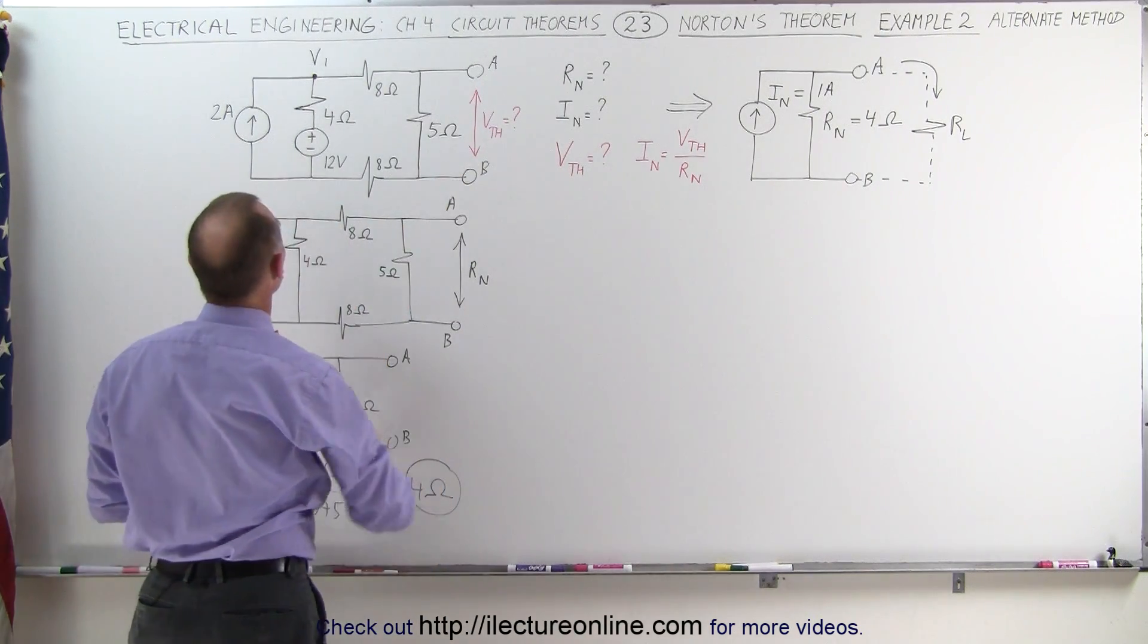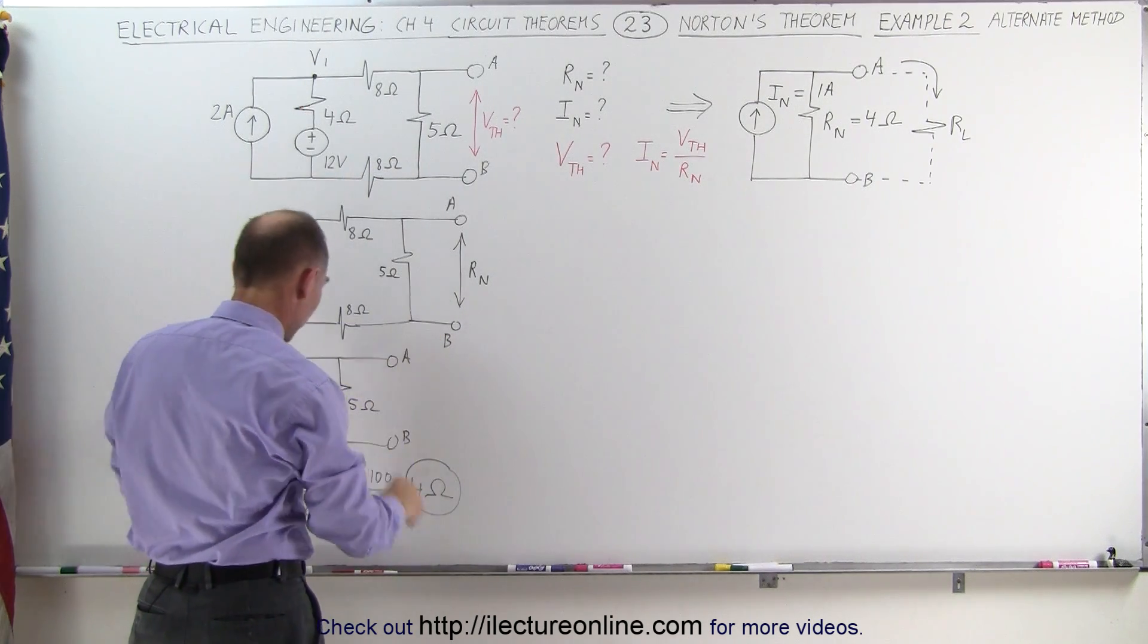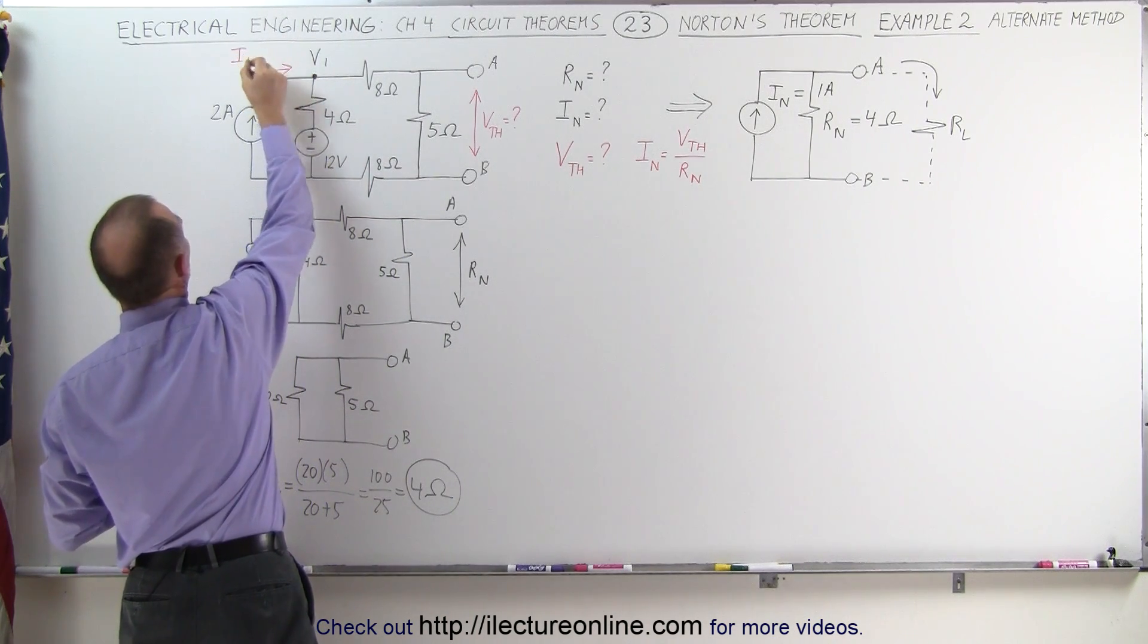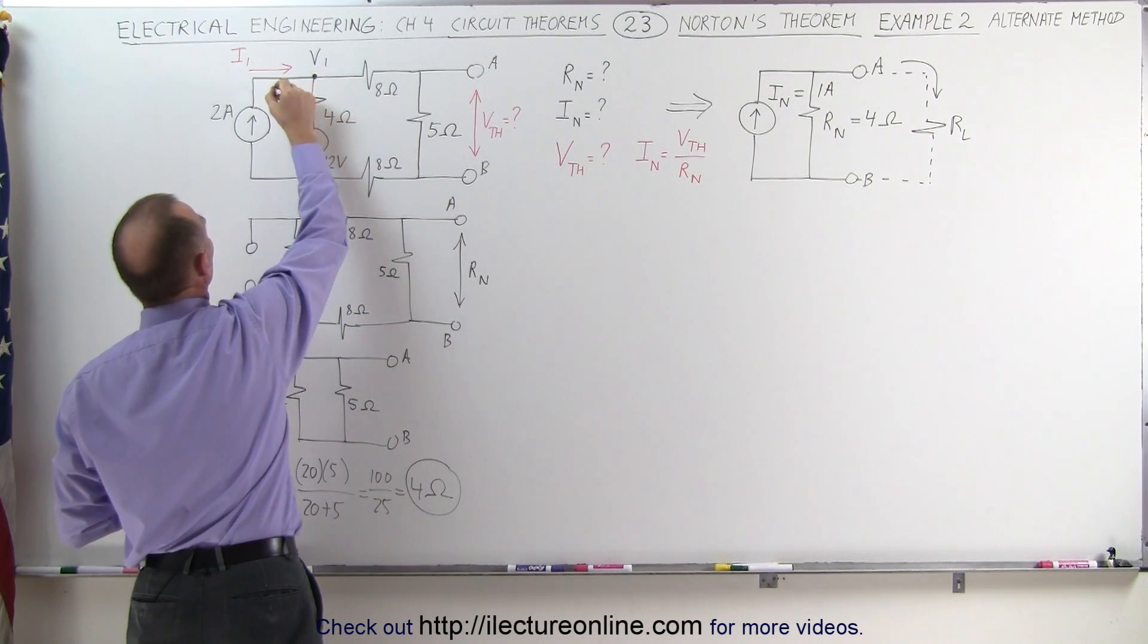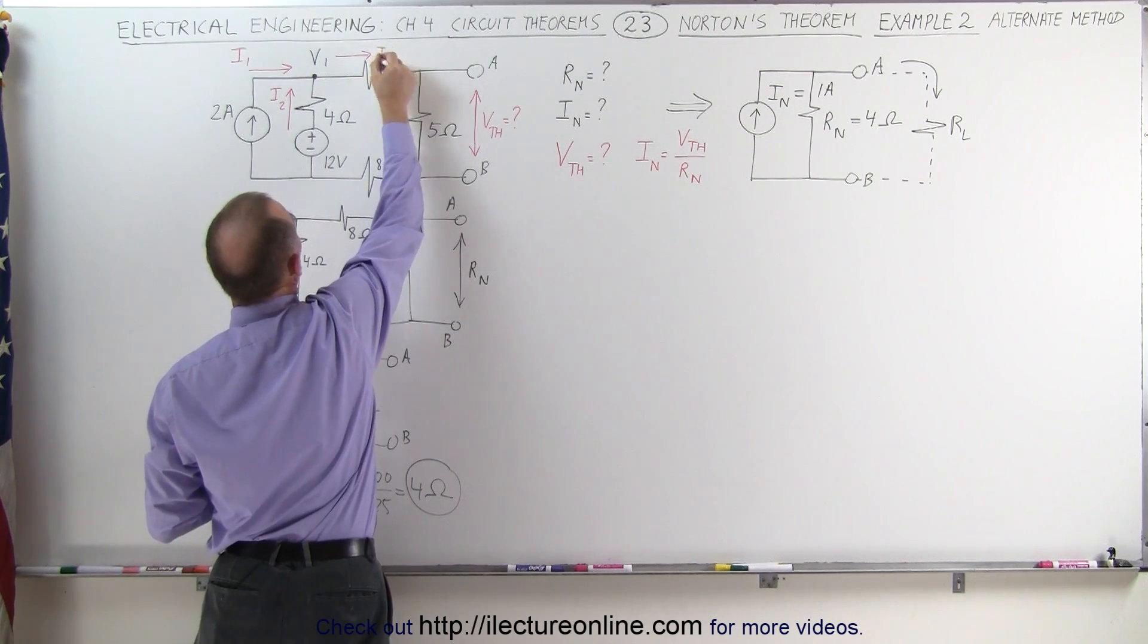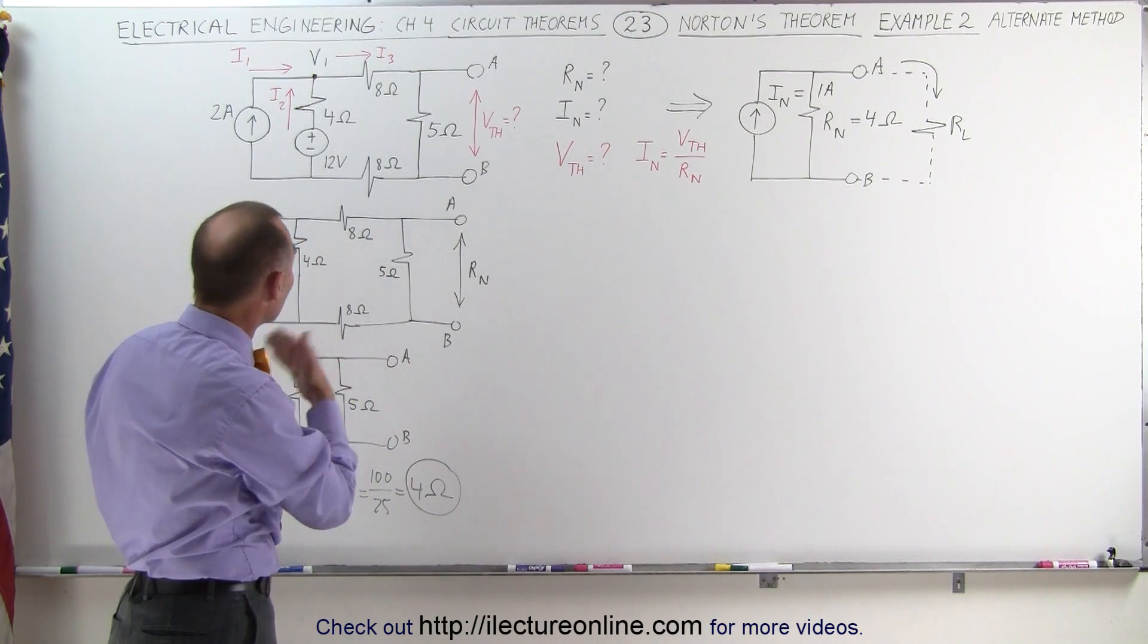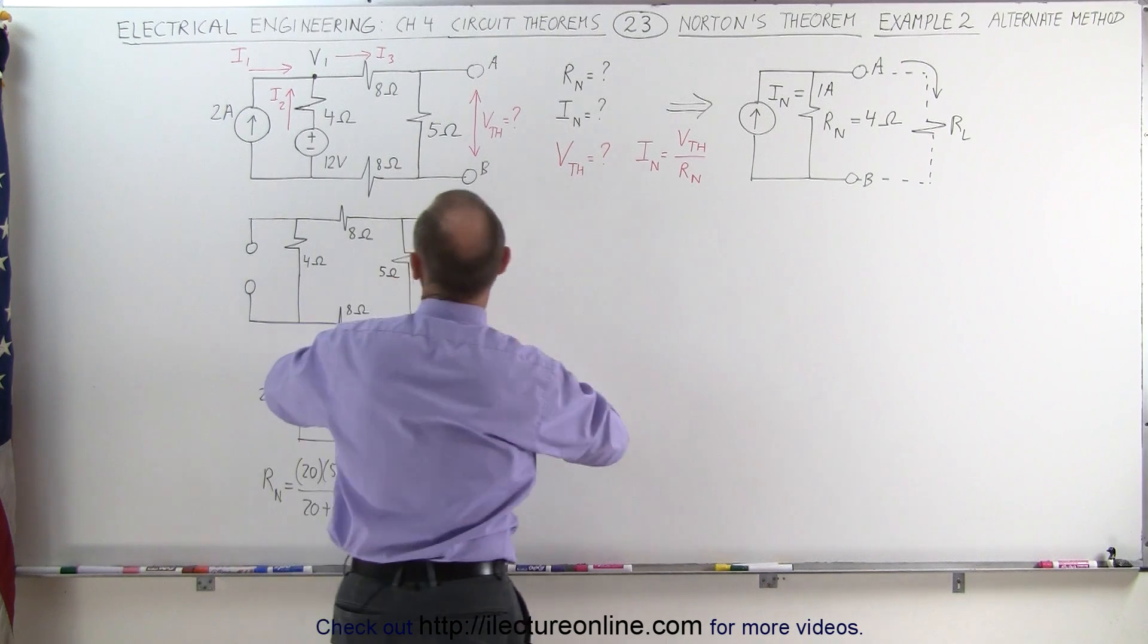And we can do that by assuming that the voltage at this branch point is equal to V1, whatever V1 is, and that we have some currents flowing into that branch. Here we have current I1 flowing into the branch point. Here we have current I2 flowing into the branch point. Let's assume we have a current I3 flowing away from that branch point. Then by summing up all the currents entering the branch point and setting it equal to all the currents leaving the branch point, we end up with this equation.